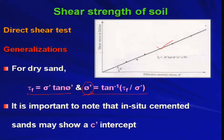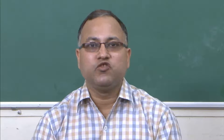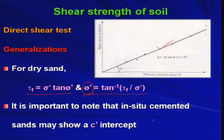It is important to note that in-situ cemented sands may show a c_prime intercept. It is not always true that sand will show c_prime equal to 0. If you get some in-situ cemented sand — very stiff or cemented where you cannot separate individual grains — that sand may exhibit a c intercept. In that situation, tau_f = c_prime + sigma_prime × tan(phi_prime), and the failure envelope will not pass through the origin but will have a cohesion intercept on the shear stress axis.